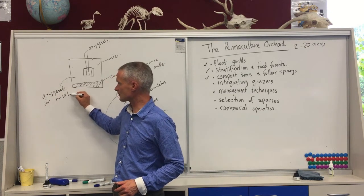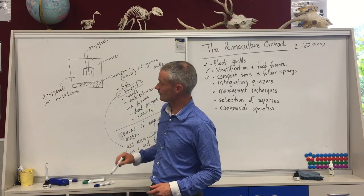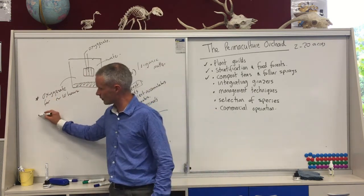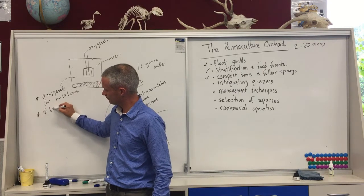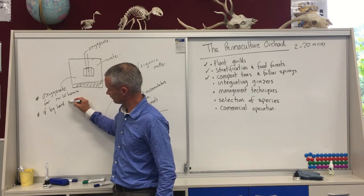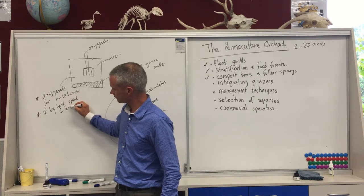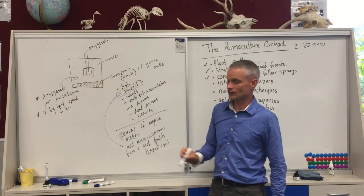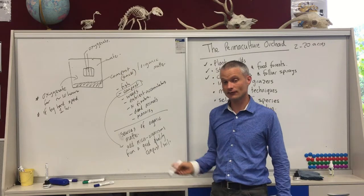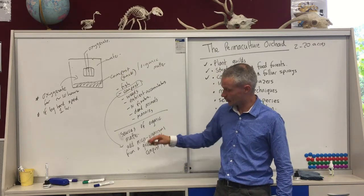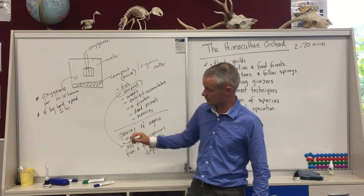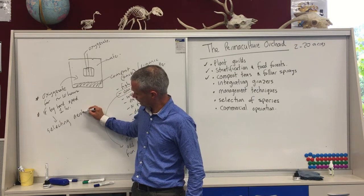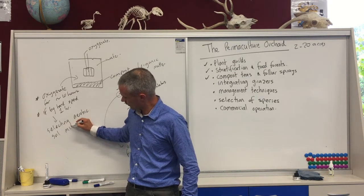Ideally you want to oxygenate it for somewhere around 10 hours, which is pretty hard to do by hand, so it's quite good to do it mechanically. If you do it by hand you probably want to spend a good hour doing it. By doing that oxygenating process, you're creating an environment that will favorably select the aerobic soil microorganisms.